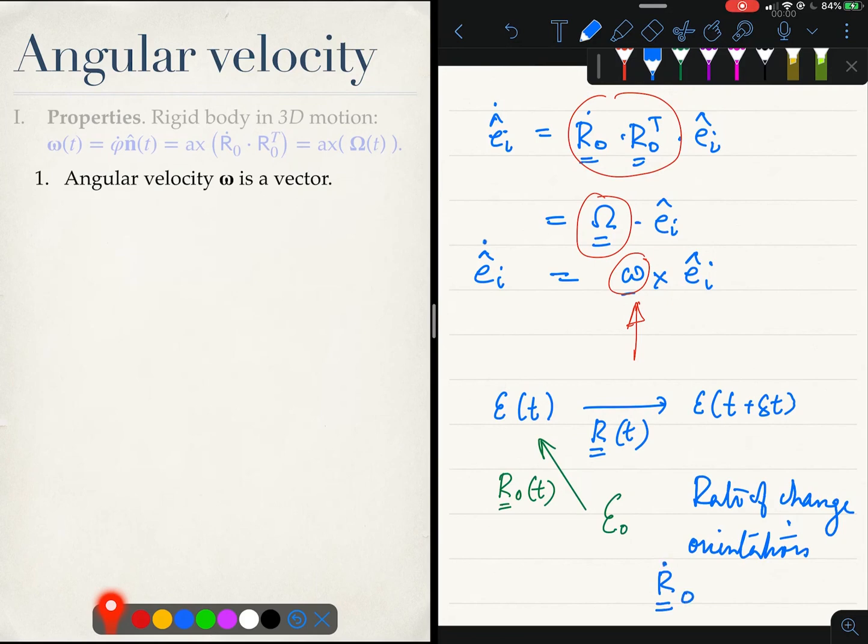We said that is a tensor and why should we use a tensor to measure something which can be done by a vector. So that is what we have achieved - we have been able to now measure the rate of change of orientation of a rigid body through a vector, the angular velocity vector.